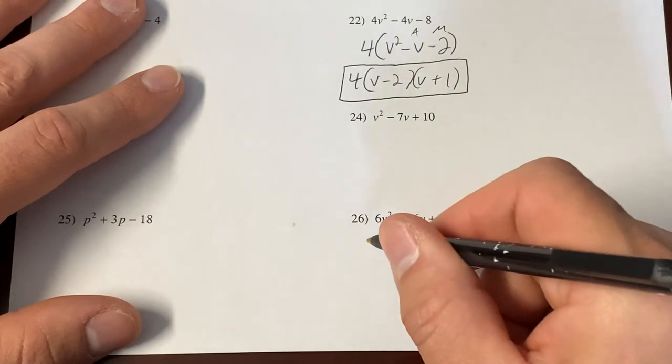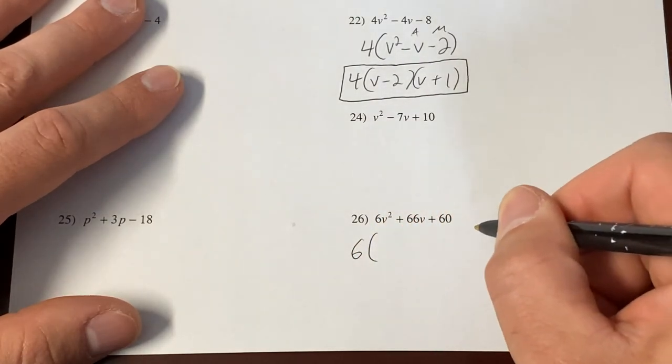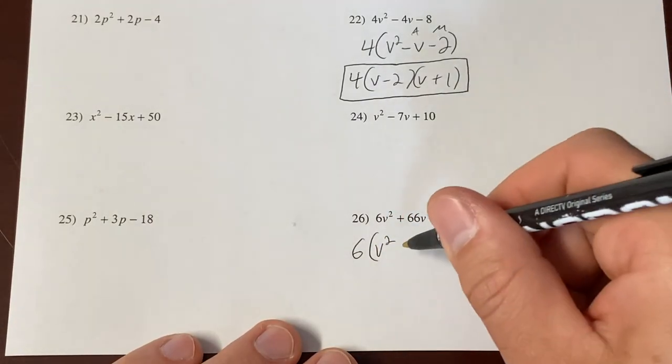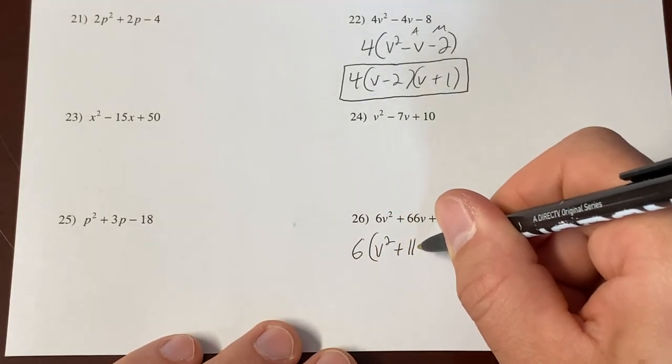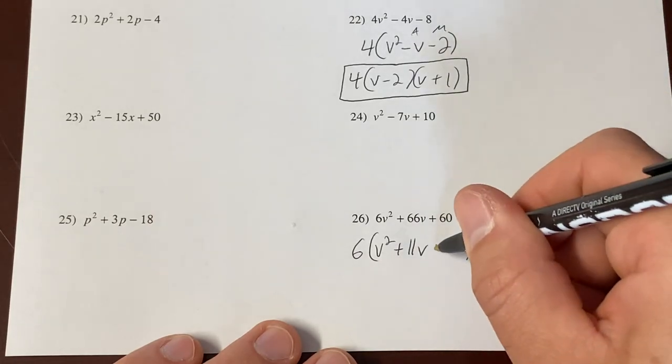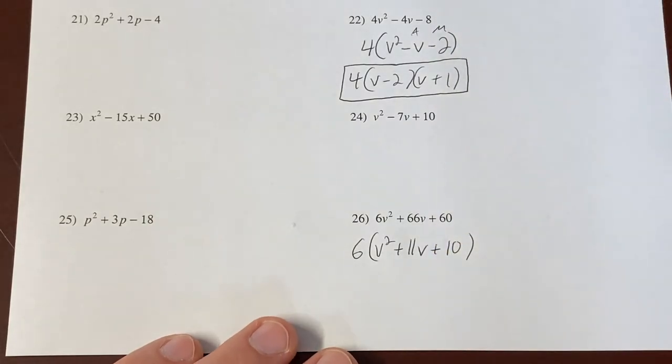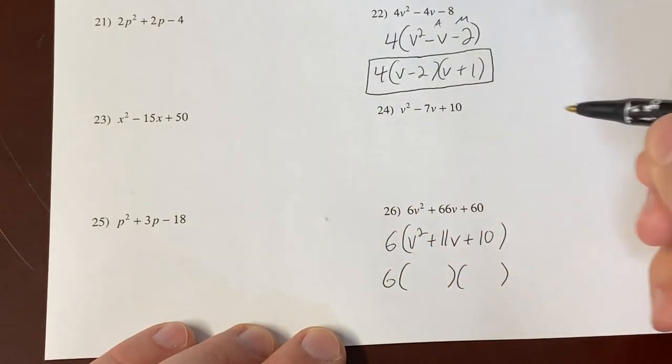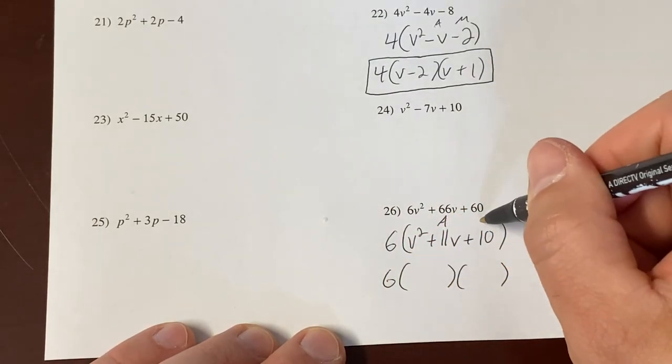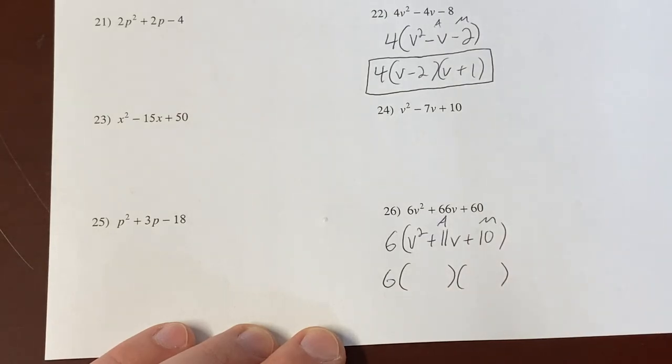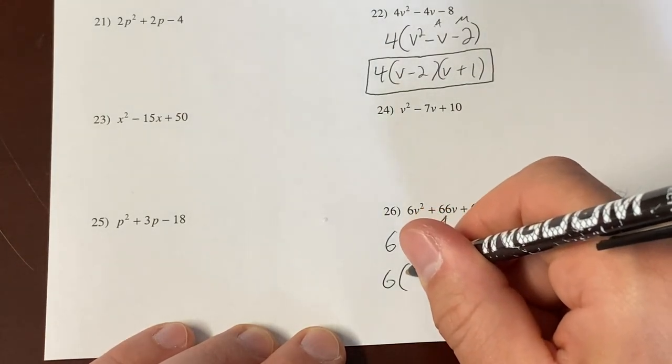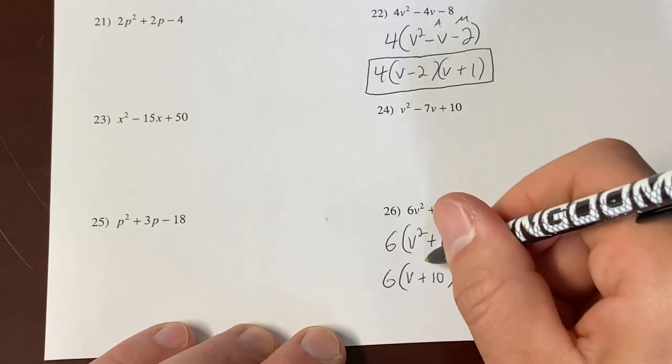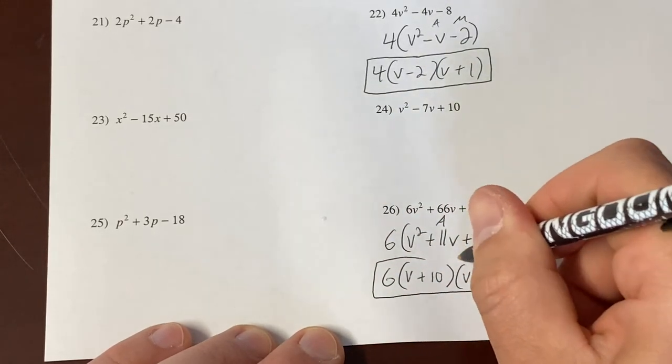Last one. This is quite possibly the very last problem we will ever do together. We got v squared when we divide by 6. We got plus 11v when we divide by 6. And we get plus 10 when we divide by 6. Don't forget your 6. Two parentheses. This is an easy one. Add to 11. Multiply to 10 when everything is positive. That's going to be 10 and 1. v plus 10 and v plus 1. And there you have it.